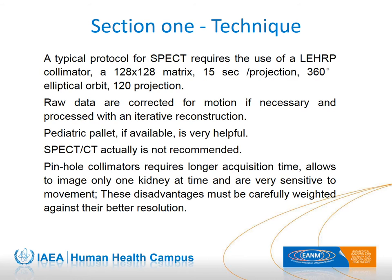A typical SPECT protocol uses a low-energy, high-resolution, parallel hole collimator, a 128 by 128 matrix, step-and-shoot mode, 120 frames at 15 seconds each, motion correction when necessary, and iterative reconstruction. SPECT-CT is not recommended because of the additional radiation burden of CT. A pediatric pallet can allow reduction in orbit range, increasing quality. The use of pinhole collimators, although offering increased resolution, is hampered by low sensitivity and a limited field of view to one kidney at a time, leading to much longer acquisition times. The overall gain compared to LEHR collimators on modern cameras is questionable.